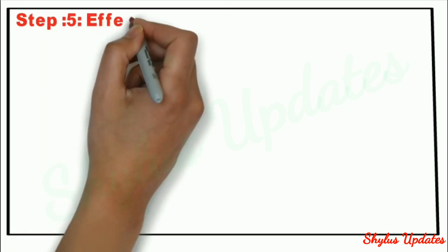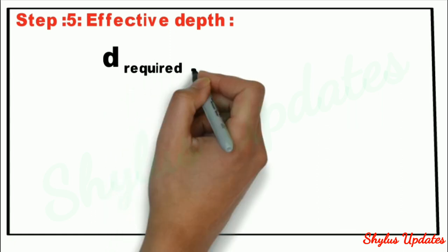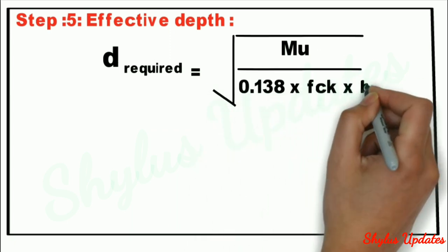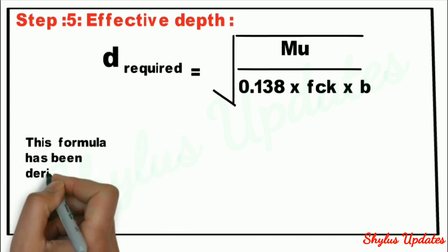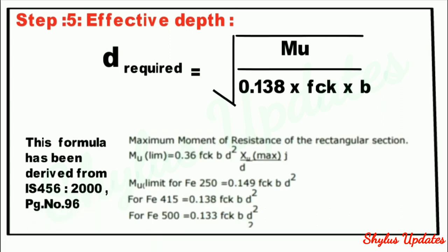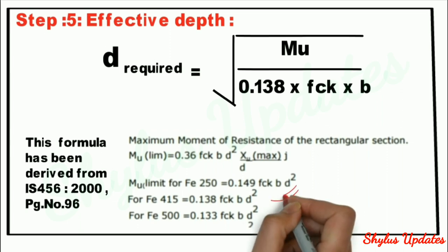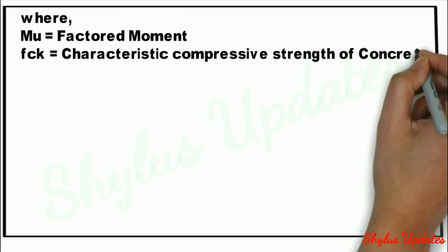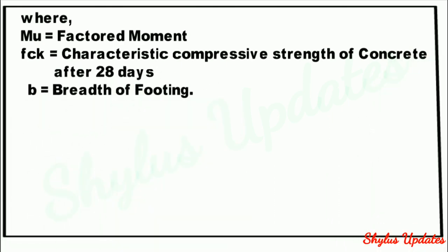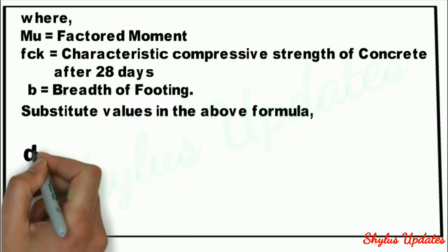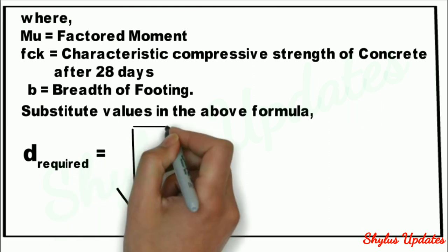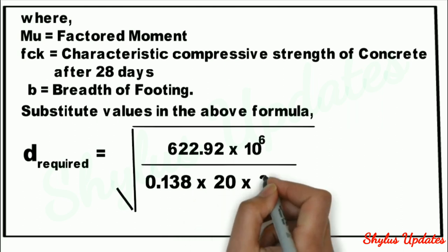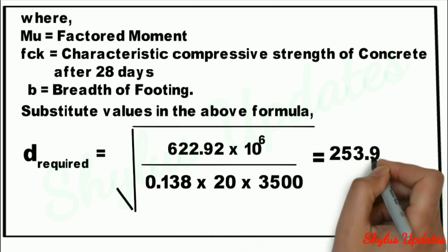Step 5: Effective depth. D required is equal to the square root of MU divided by (0.138 × FCK × B). This formula has been derived from IS 456-2000 page number 96 for Fe415: 0.138 × FCK × B × D². Where MU is the factored moment, FCK is the characteristic compressive strength of concrete after 28 days, and B is the breadth of the footing. Substituting values, we get the answer 253.93 mm.